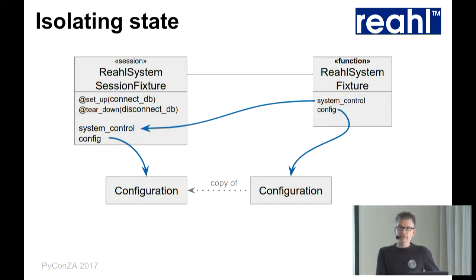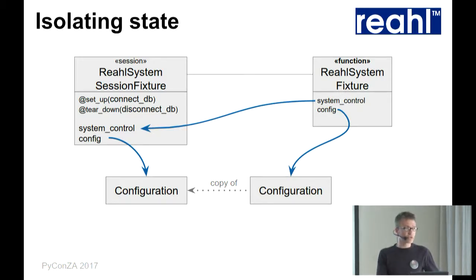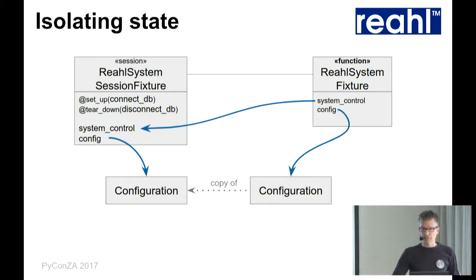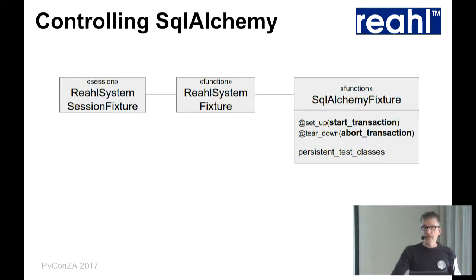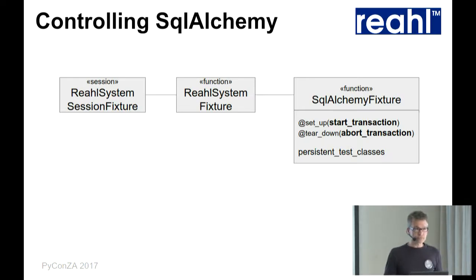To solve that, we have a shadow fixture called the real system fixture, which is function-scoped and just copies the configuration from the session-scoped one. So you can change it to your heart's content and it'll be thrown away after each test. We can't do the same with the database. To deal with that, we have a different tactic — we do everything via SQLAlchemy. We have a SQLAlchemy fixture that, before each test starts, begins a transaction. At the end of the test, it just rolls it all back.